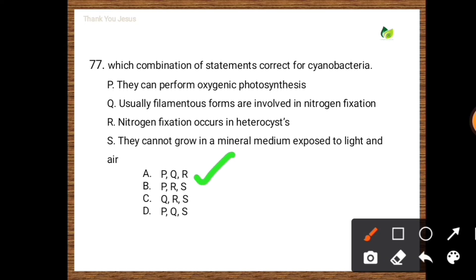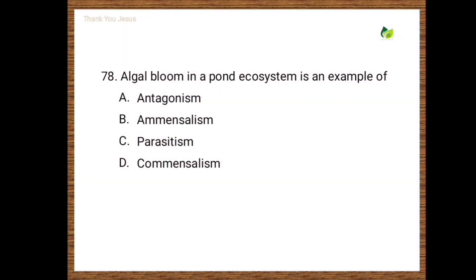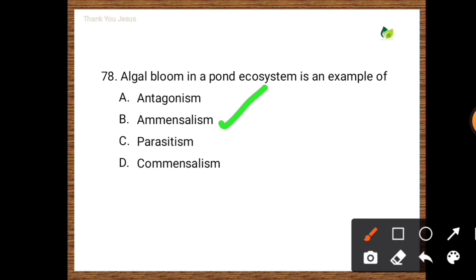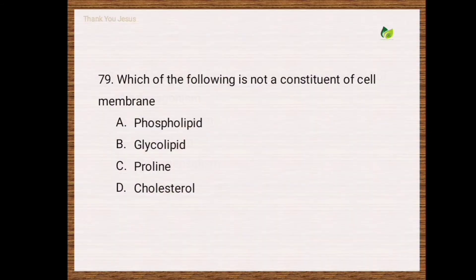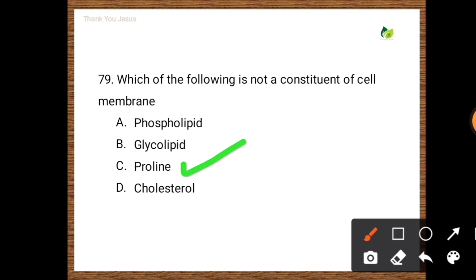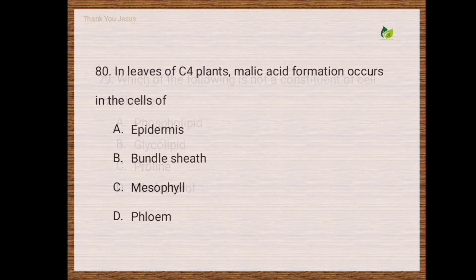Next question: Algal bloom in a pond ecosystem is an example of — antagonism, amensalism, parasitism, commensalism. The correct option is amensalism. Next question: Which of the following is not a constituent of the cell membrane? Options are phospholipid, glycolipid, proline, cholesterol. The correct option is proline.